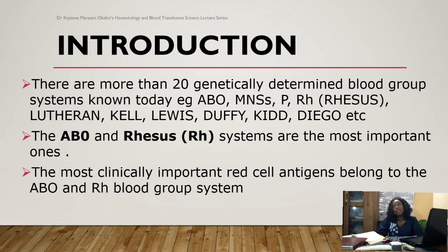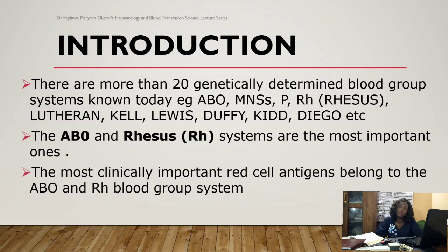Other blood group systems include MNS, P blood group system, Lutheran, Kell, Lewis, Diego, Kidd, Duffy, and many others. Of all these different blood group systems, ABO and the Rh system are the most important — they are the most clinically important.